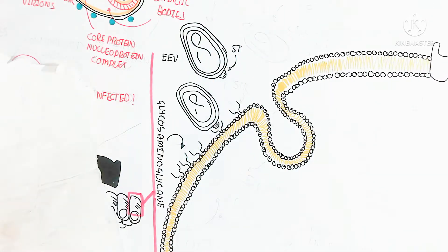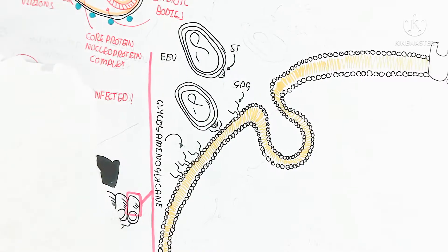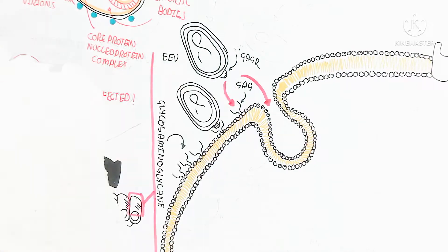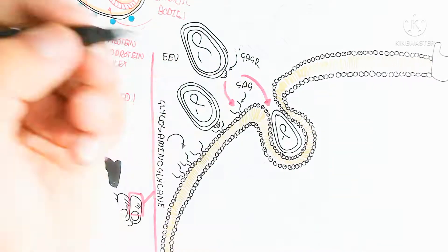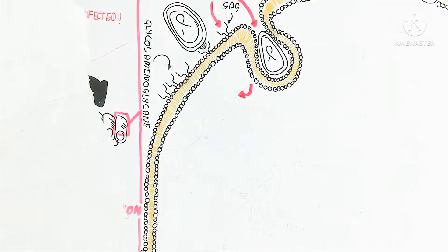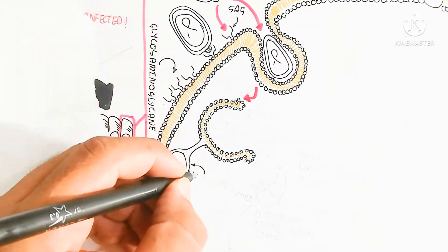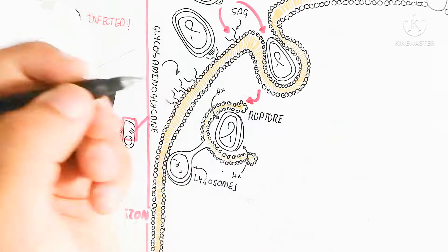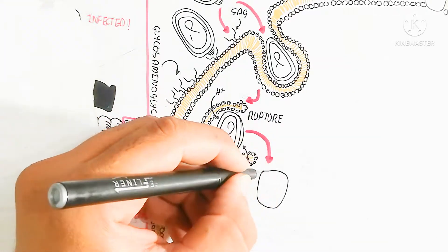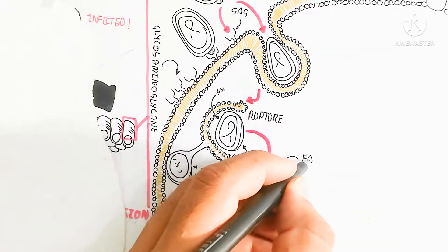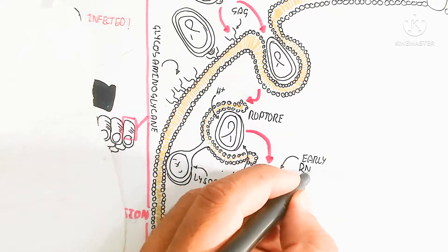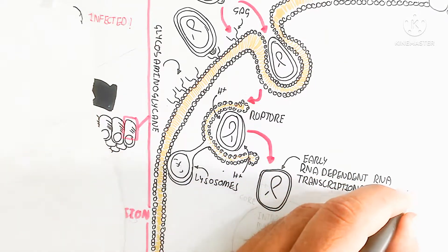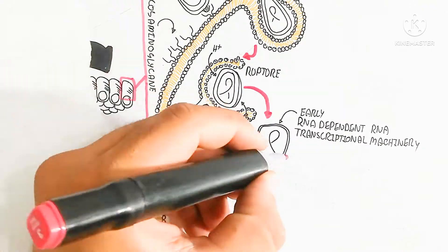Glycosaminoglycans (GAGs) are thread-like structures present in the plasma membrane of the host cell near the skin. GAG receptors are present on the monkeypox virus surface and bind to the glycosaminoglycans on the host cell, leading to endocytosis through infolding of the plasma membrane. Protons enter, increasing the acidic environment, which leads to rupture of the endosome. Lysosomal enzymatic activity then leads to early DNA-dependent transcriptional machinery activation.